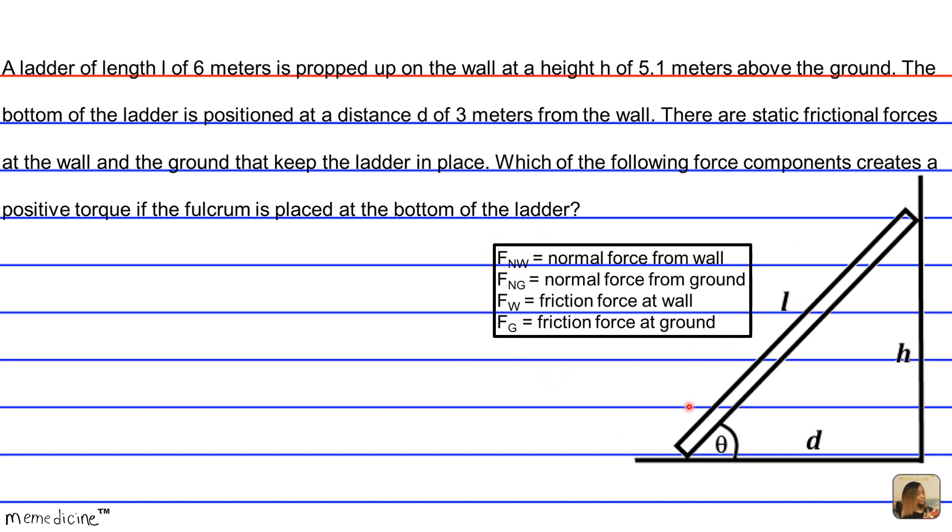Alright, so this is a reference. It's like a major hint to help you solve this problem. F sub NW equals the normal force from the wall, so this type of force. F sub NG equals the normal force pushing up from the ground. F sub W is a friction force at the wall opposing the fall of the ladder. And F sub G is the friction force at the ground going this way to the right, opposing the fall of the ladder at the ground.